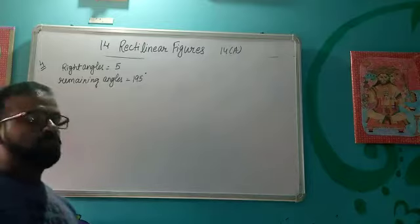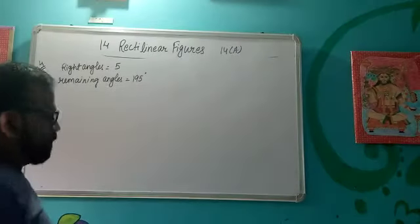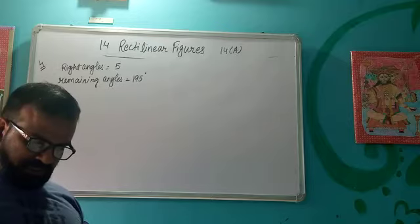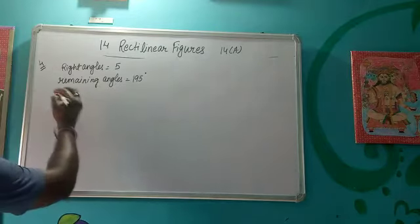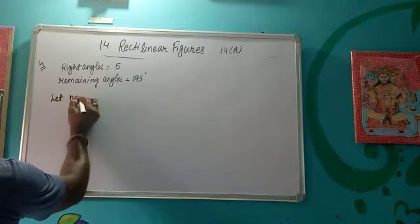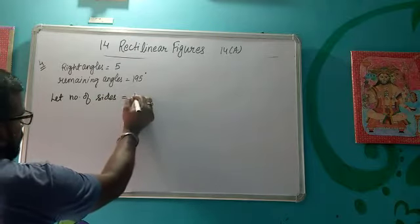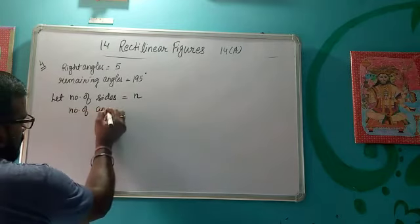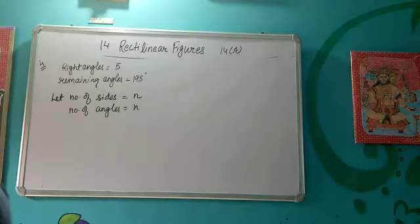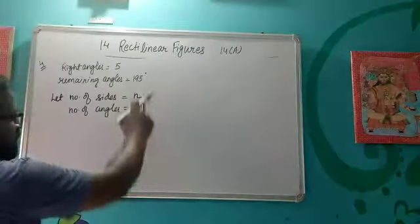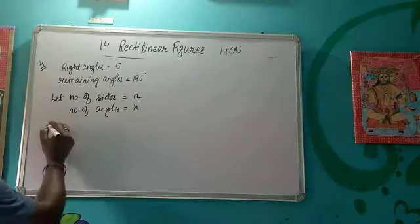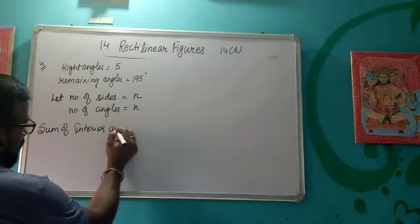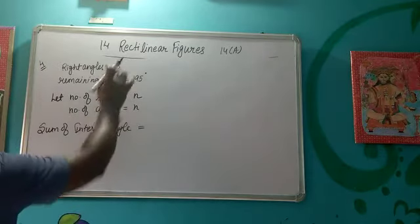Let's discuss a few more questions of Exercise 14a. In question number 4, it is given that in a polygon there are five right angles and the remaining angles are equal to 195 degrees. Find the number of sides. Let the number of sides equal to n. So if the number of sides are equal to n, then the number of angles is also n.